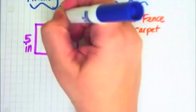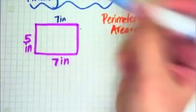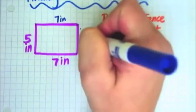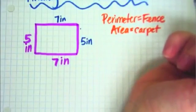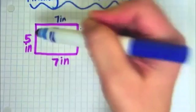7 here means that the other side is 7 inches, and the 5 here, the other side is 5 inches. So for perimeter, all we have to do is add up the sides.